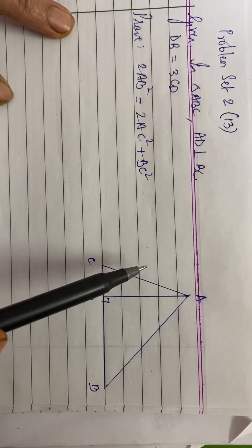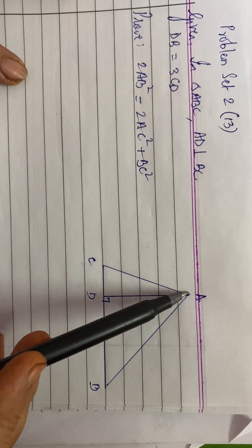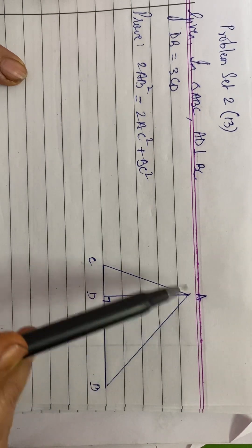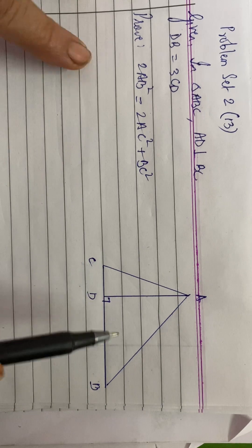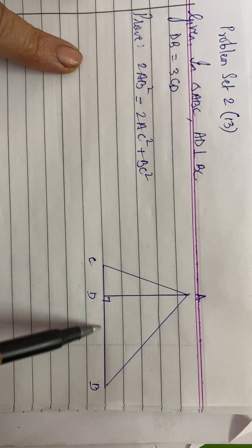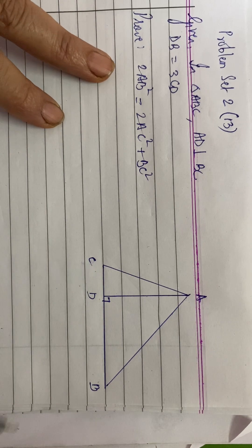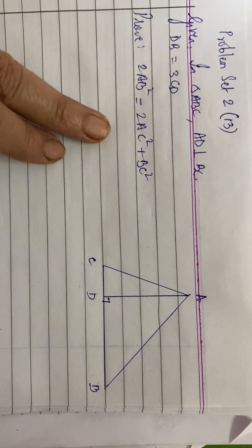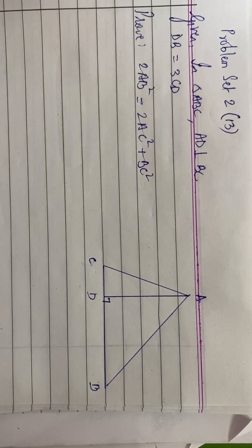In this problem, we are given that AD is perpendicular to BC in triangle ABC, and we are given that DB is 3 times CD. We have to prove that twice AB square is equal to twice AC square plus BC square.